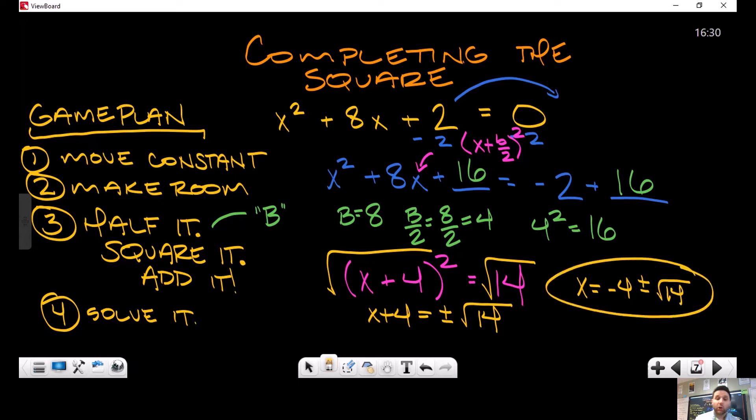That's a pair of answers - that's what I'm looking for here. You're literally going to have -4 + √14 and -4 - √14. Let's look at the next one.